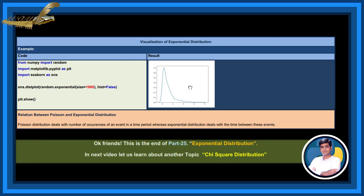Relation between Poisson and exponential distribution. Poisson distribution deals with the number of occurrences of an event in a time period whereas exponential distribution deals with the time between these events.